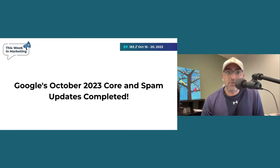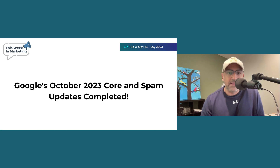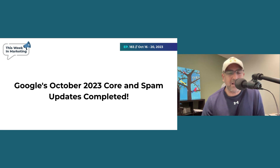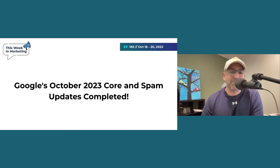Google has just finished rolling out the October 2023 core and spam updates. They started back on the 5th of October — covered in past episodes — and now I'm just sharing that the update has been completed. The core update took about 14 days, which is generally what it takes for Google algorithm updates to roll out. It had a significant impact on SEOs and websites, causing a lot of volatility in search rankings. The update is global and affects all types of content. If you've noticed changes in your website performance, this could be why. Google hasn't disclosed what percentage of queries were impacted, but it is safe to say the reach is wide.